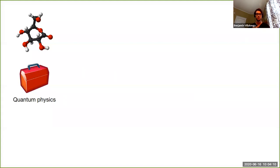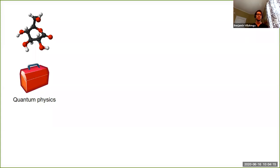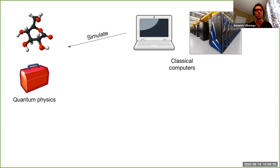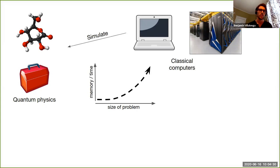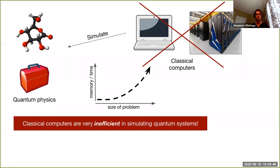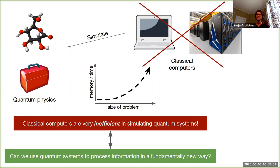The problem is that when you study quantum systems — systems that cannot be understood without quantum physics — and try to simulate them with typical classical computers, things get complicated very quickly. As you increase the size of the problem, the scaling of computational resources is not good at all; the memory and time you need blow up exponentially. So we conclude quickly that classical computers are very inefficient in simulating quantum systems.